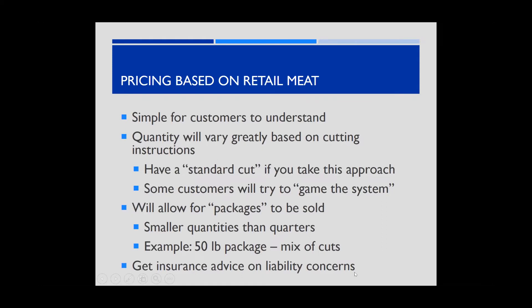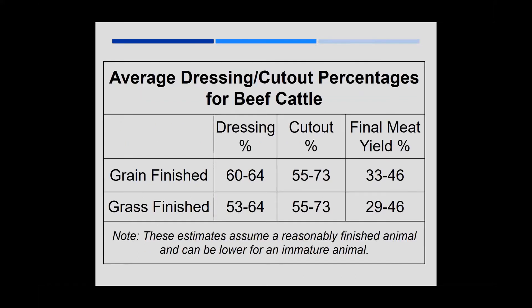Basic rules of thumb for grain-finished beef: dress percentage 60–64%, cutout 55–70%+ (lower numbers from heavy boneless cut instructions), final meat yield from live weight to packaged meat 33–46%. For grass-fed cattle: dress percentage 53–64%, cutout comparable, final meat yield upper 20s to mid-40s.